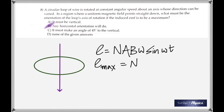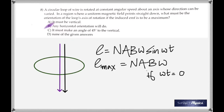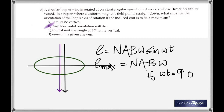EMF becomes maximum when sin(ωt) equals 1, which happens when ωt is 90 degrees. Remember that the angle between the magnetic field and the perpendicular drawn to the coil has to be 90 degrees. It's not the angle between the magnetic field and the plane of the coil, but rather the angle between the magnetic field and the perpendicular drawn to the plane of the coil.